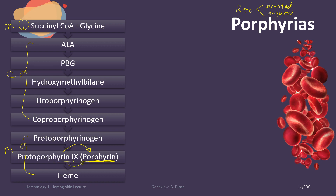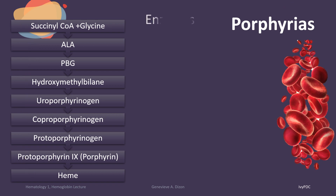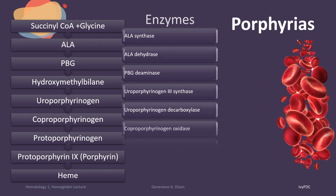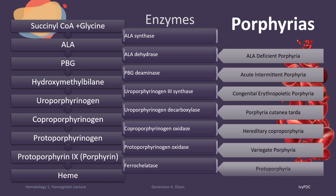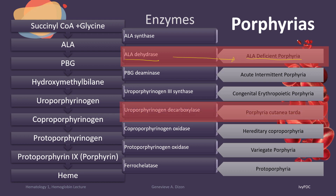Since our reference is Rodak's Hematology, we will stick with protoporphyrin-9. Porphyrias are caused by defective enzymes involved in the heme biosynthesis pathway, and therefore porphyrias are named according to the enzyme which is defective or deficient. For example, a defect in ALA dehydratase will be called ALA-deficient porphyria, and a defective enzyme uroporphyrinogen decarboxylase will be named porphyria cutanea tarda, and so on and so forth.